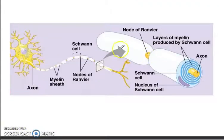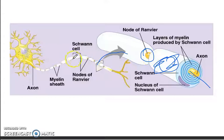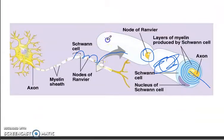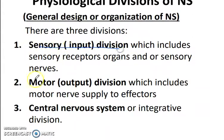Here is the nerve cell with a node of Ranvier, the axon, and the myelin sheath shown in white. Impulses travel from one node of Ranvier to the other — this is how they travel. The myelin sheath itself does not conduct the nerve impulse.